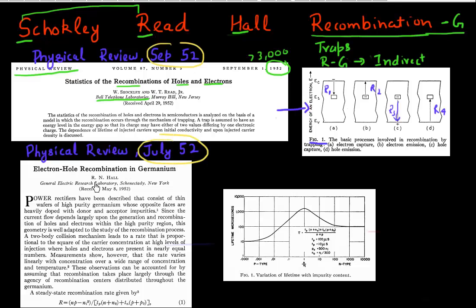At a slightly earlier date, this paper came from Robert Hall, who used to work at GE Laboratory at that time. Robert Hall is also credited for the invention of semiconductor lasers, so he's famous in another context as well. He was looking at lifetime and recombination generation in PN diodes at that time.